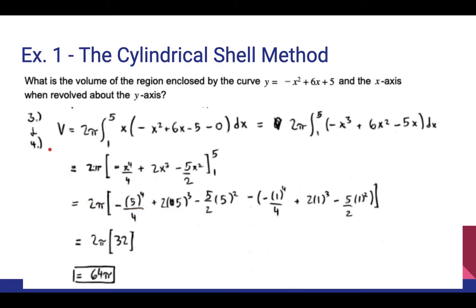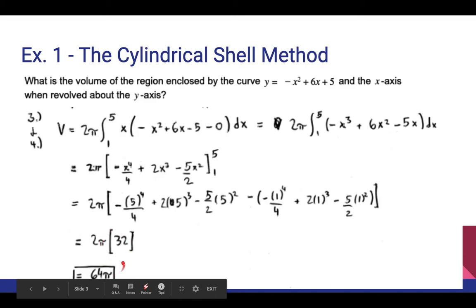Applying our Shell Method formula: V equals 2π times the definite integral from x equals 1 to x equals 5 of x times [negative x squared plus 6x minus 5 minus 0] dx. Distributing x gives 2π times the integral from 1 to 5 of negative x cubed plus 6x squared minus 5x dx. Applying the Fundamental Theorem of Calculus yields 2π times [negative x⁴/4 plus 2x³ minus 5x²] evaluated from 1 to 5. After evaluating, we get 2π times 32, so the volume is 64π.